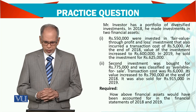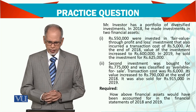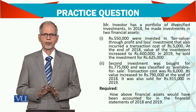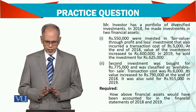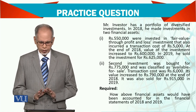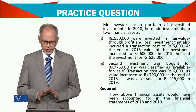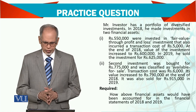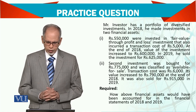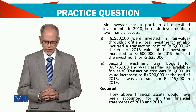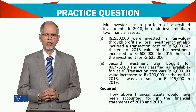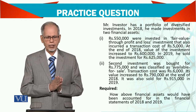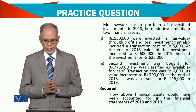In 2018, Mr. Investor made investments in two financial assets. The first: 550,000 was invested in a fair value through profit and loss (FVTPL) account investment. This also incurred a transaction cost of 5,000, which is the broker fee you pay when buying.